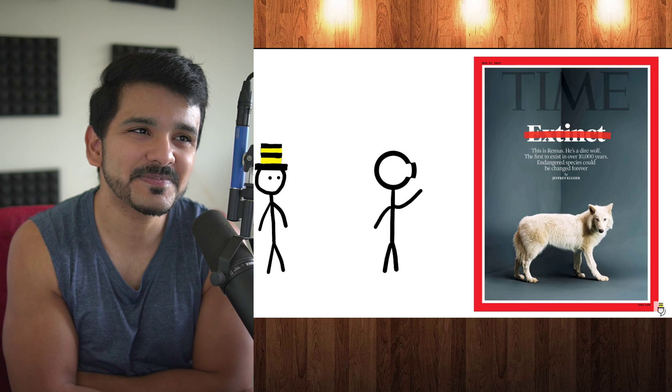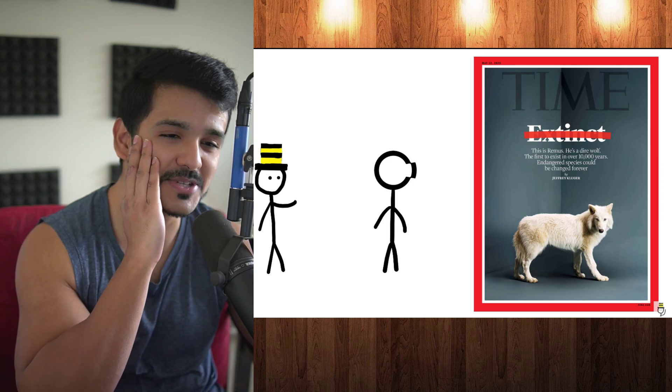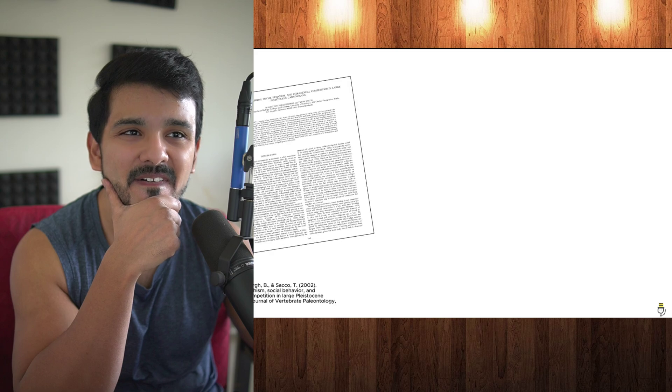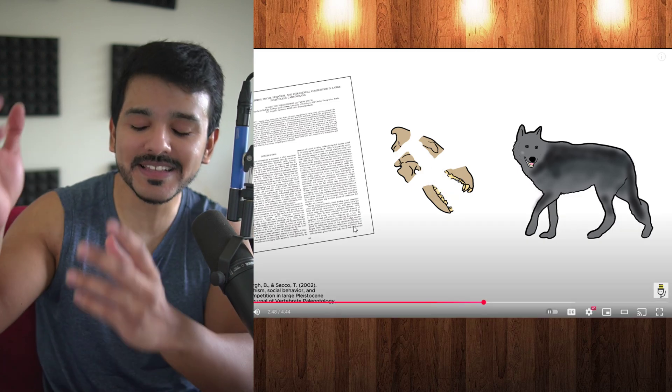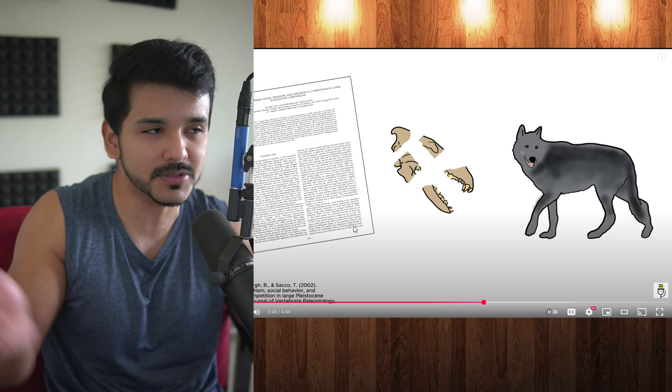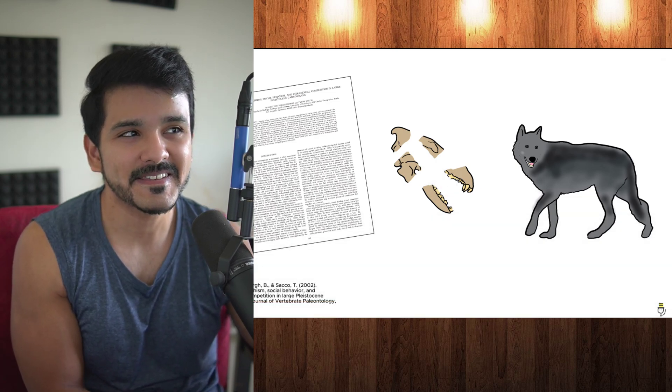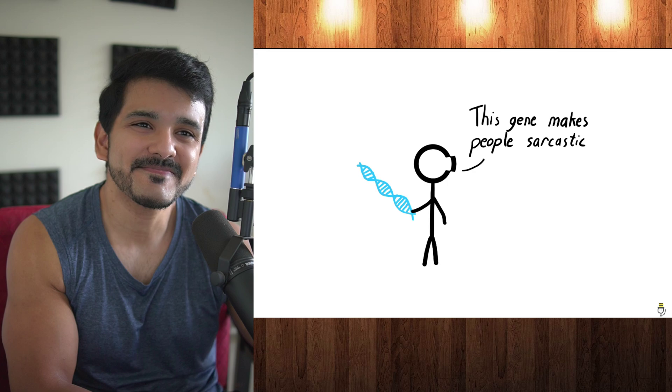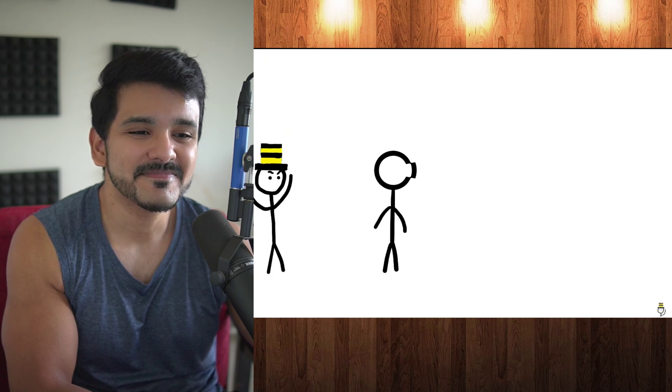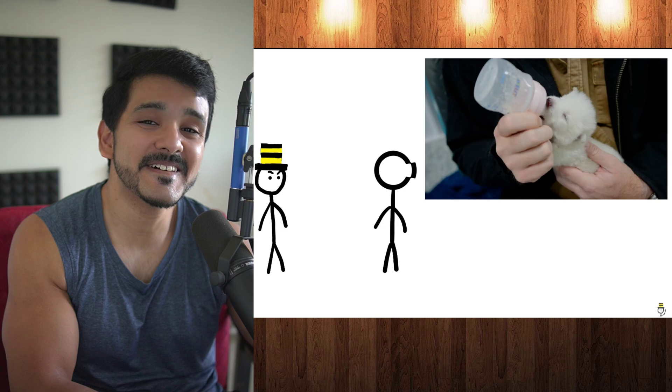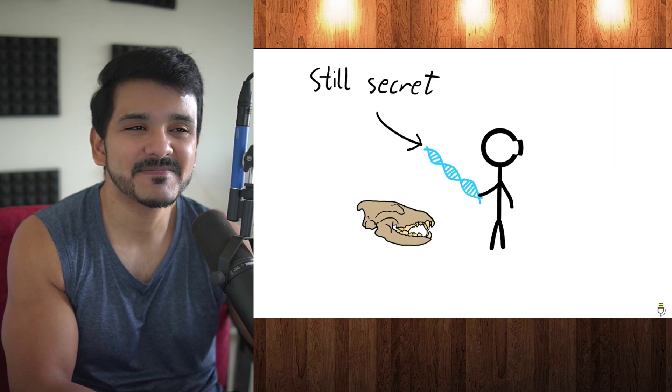How can you possibly know these puppies will behave like a direwolf? Direwolves are extinct. Our theories for how they behaved are based on limited fossil evidence and comparisons to living animals like gray wolves. Unless this is a soft launch for a secret time machine business or you have a science fiction level understanding of behavioral genetics, you have no way of knowing that the handful of genes you altered will make these puppies act less like gray wolves and more like direwolves. Those are cute puppies though.